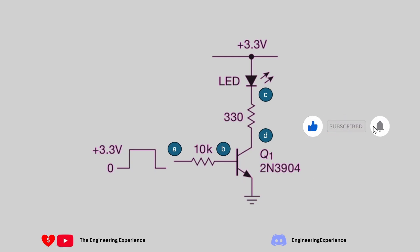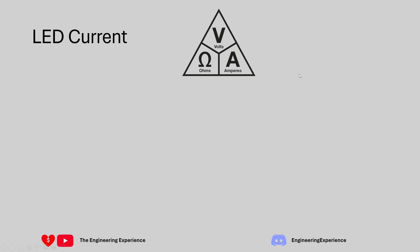To calculate the LED current, we need Kirchhoff's current law and Ohm's law. We'll start with a green LED. The book has graphs showing various voltage drops for LEDs - they change with color and current, but the change with current can be assumed to be negligible for this example. For a green LED, the forward voltage VF is equal to 2 volts.